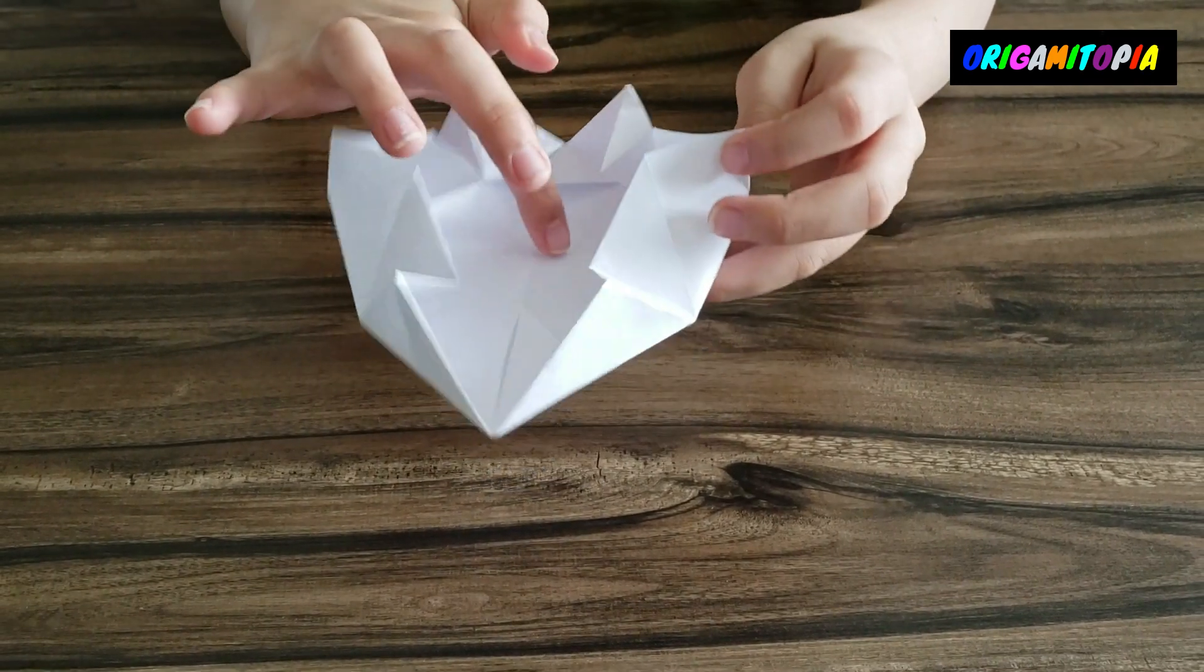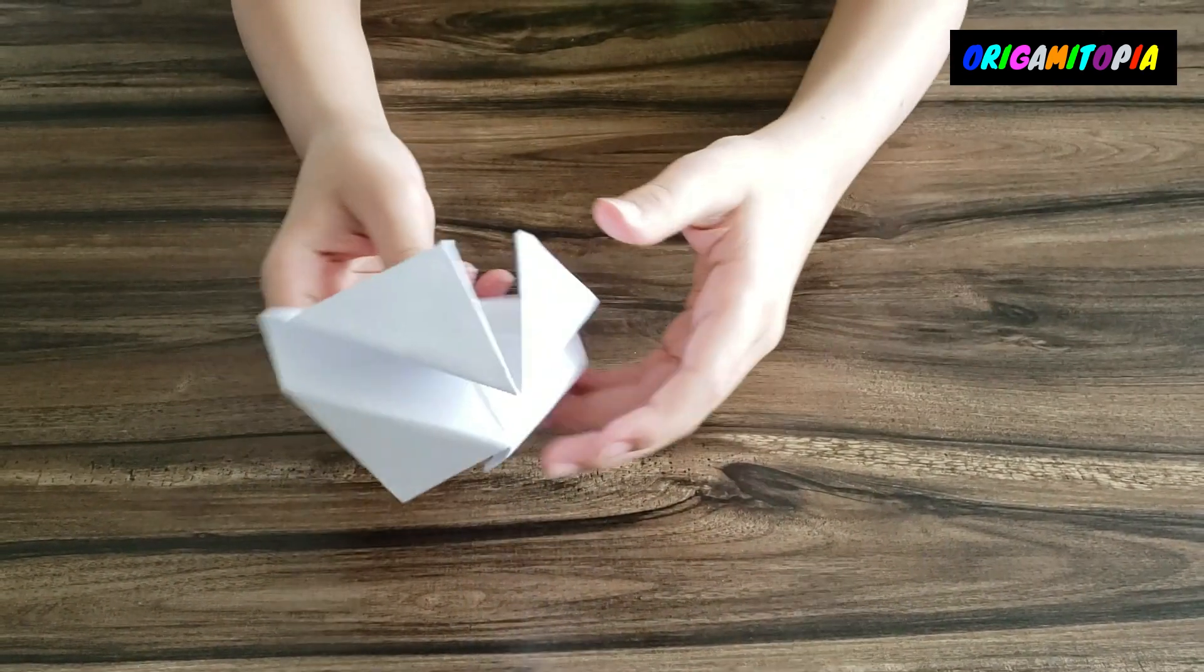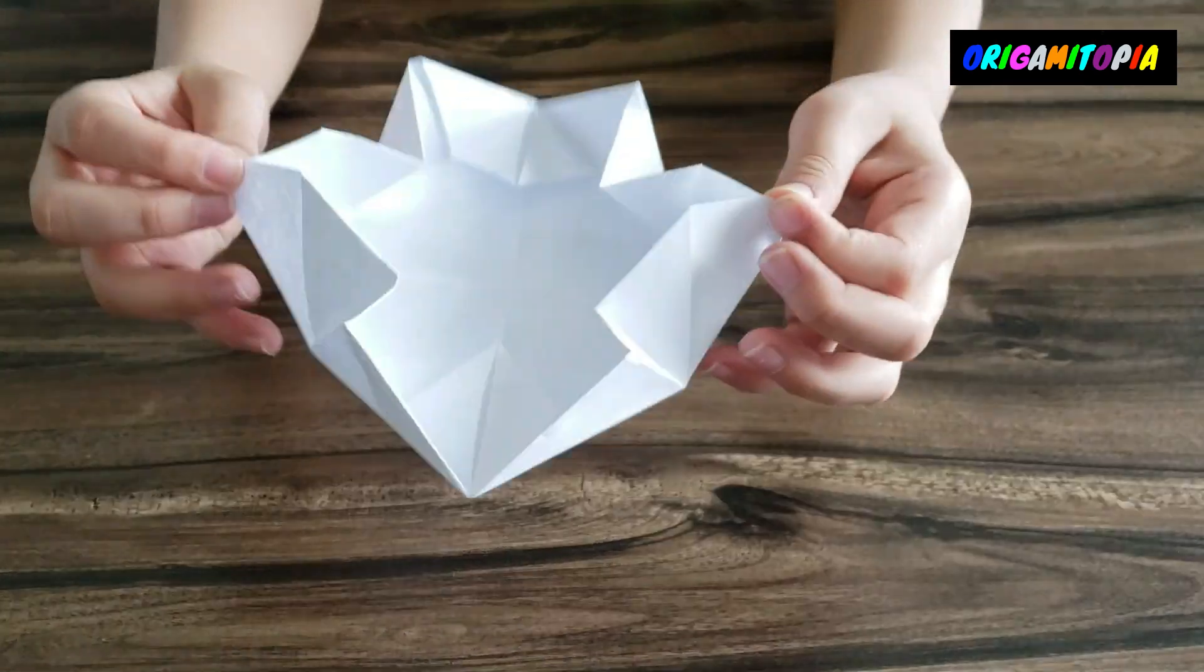Just put these two flaps right on that crease, just like that. And when you want to make it pop up, just pull on that.